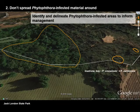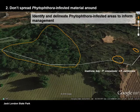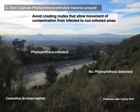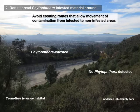Identifying and delineating infested areas helps to inform management. Because once we know what areas are infested, or have a good concept of those, we can try to avoid movement. In this particular situation, we want to avoid making connections between this Phytophthora-infested slope on this side of the spillway and this native habitat of endangered species on the opposite side.